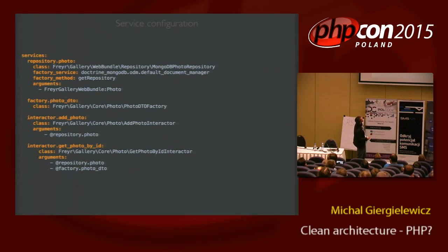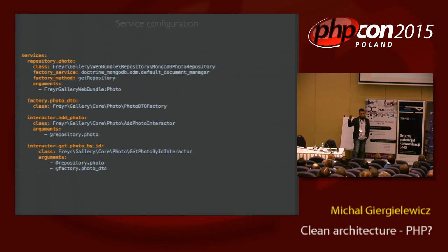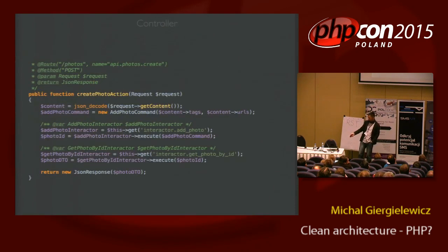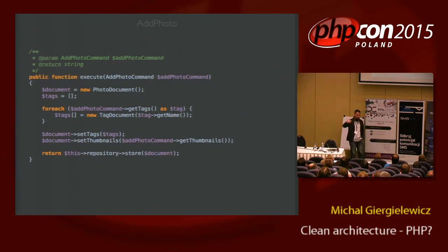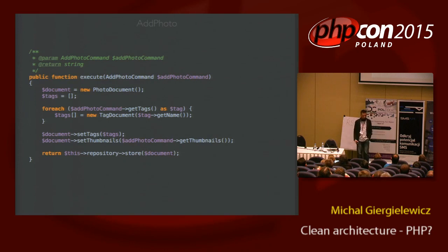WebBundle is basically Symfony — the delivery mechanism, everything on the left of the boundary. And Core is everything inside. My interface here — this repository store — is an interface created at the Core level and has only getById and store, two methods. And if I inject here a MongoDB repository which implements that interface, then I'm done. My core application doesn't know that this is Mongo.